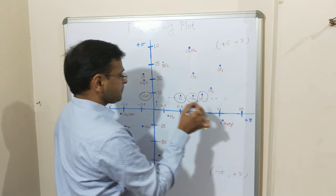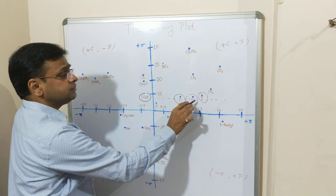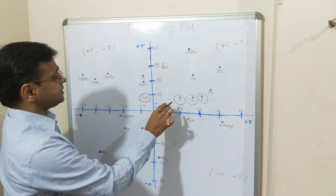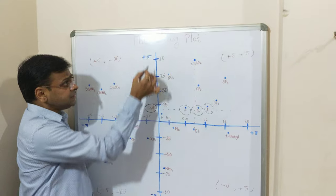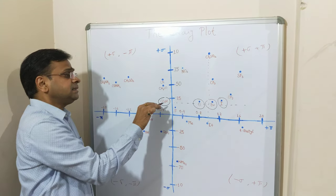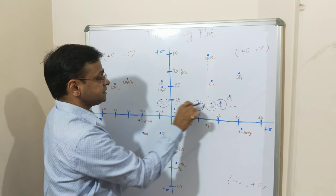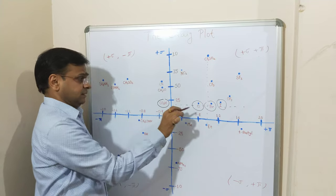If you draw a horizontal line, what you find is that carboxylic, chloro, bromo, and iodo have approximately the same sigma value. They are having the same sigma value, means they can be said to be isoelectric.